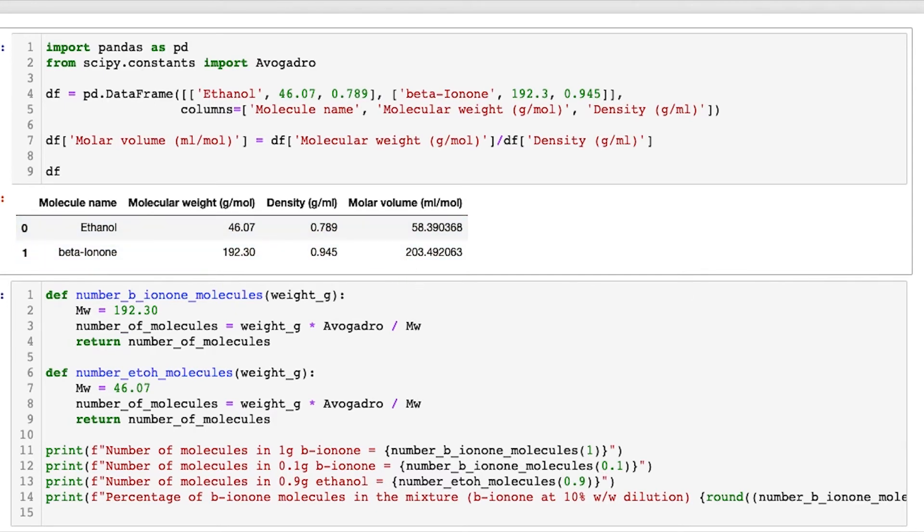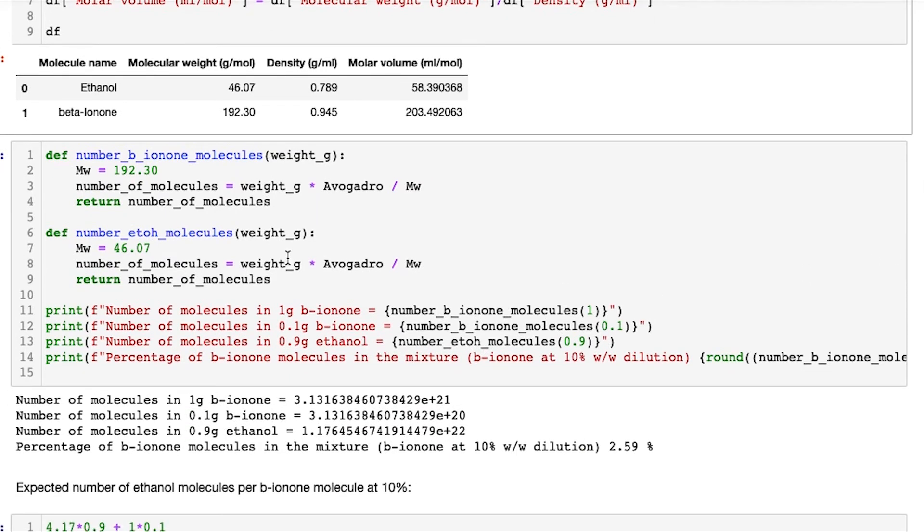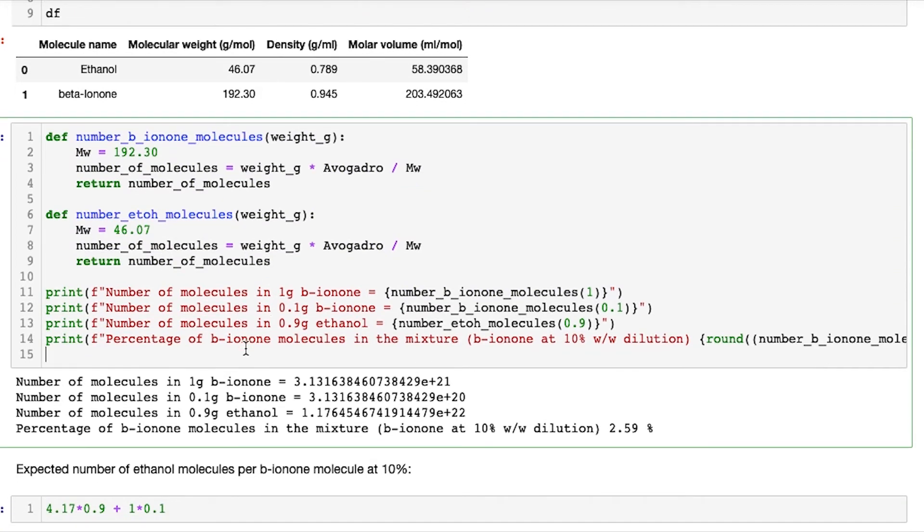Okay, why does this matter? Well what I've done is now written some code that works out the number of molecules in a given weight of the stuff. Say we're weighing it out, this is a bit like an experiment. You don't really need to understand any of it, but effectively what we're doing is say we had one gram of beta-ionone, how many molecules would be in that? The answer is we have roughly 3 times 10 to the power of 21. That's a lot, a big number of molecules. It's essentially 3.131 with 21 extra zeros on the end before the decimal place.